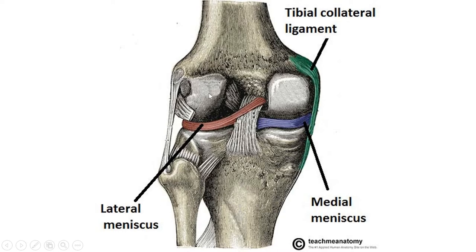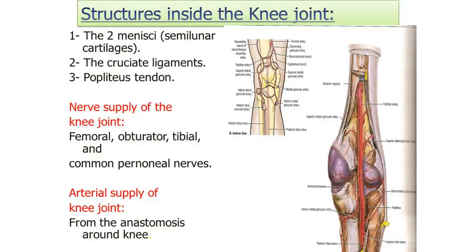The capsular or extracapsular ligaments include the lateral collateral and medial collateral ligaments. The other name for the lateral collateral is the fibular collateral ligament because superiorly it attaches to the lateral epicondyle of the femur and inferiorly to the head of the fibula. The medial collateral ligament is attached superiorly to the medial epicondyle of the femur and inferiorly to the tibia. The lateral collateral ligament strengthens the knee from the lateral aspect, whereas the tibial collateral ligament strengthens it from the medial aspect.